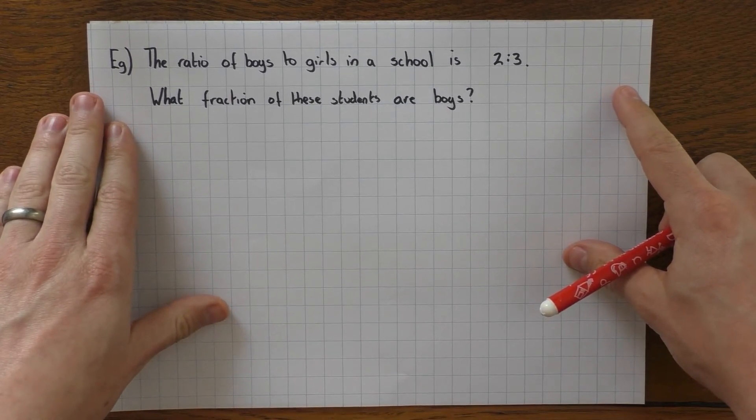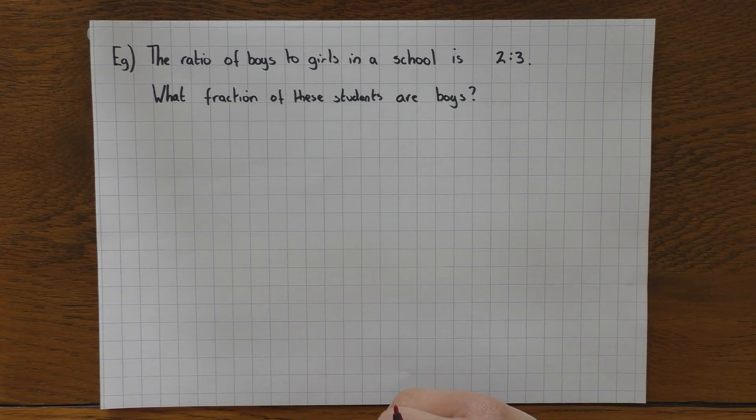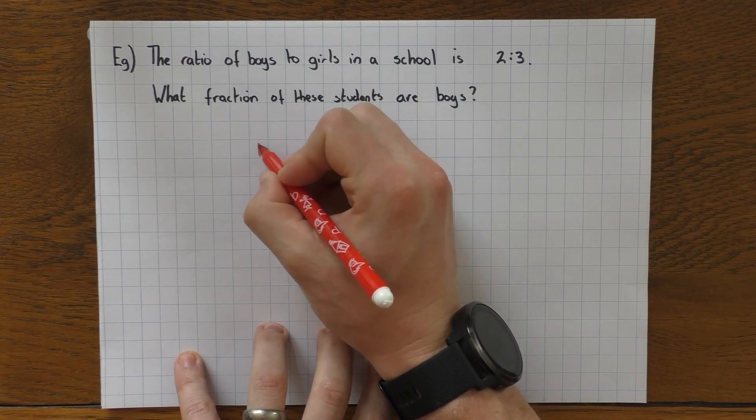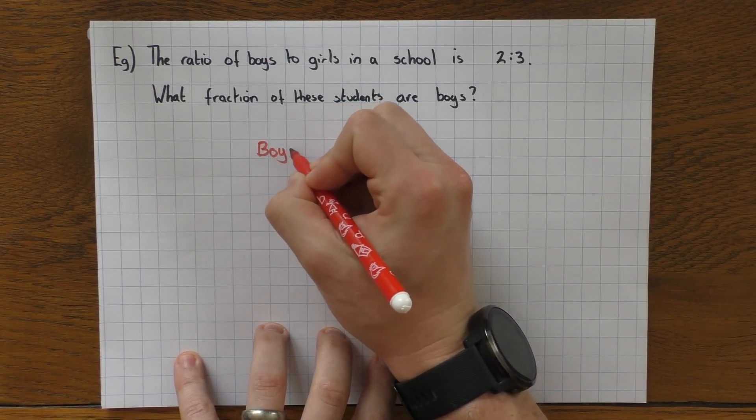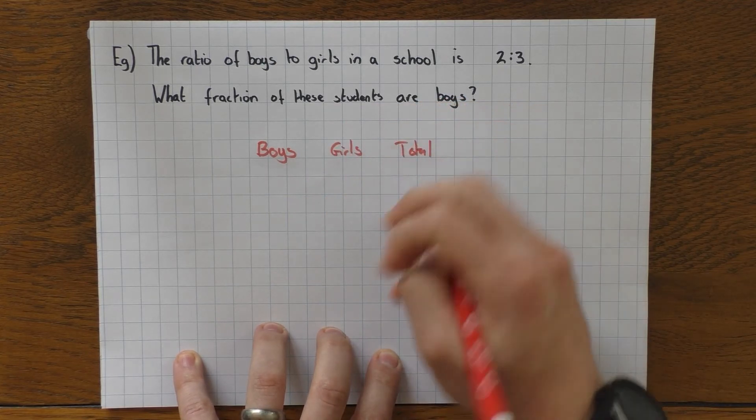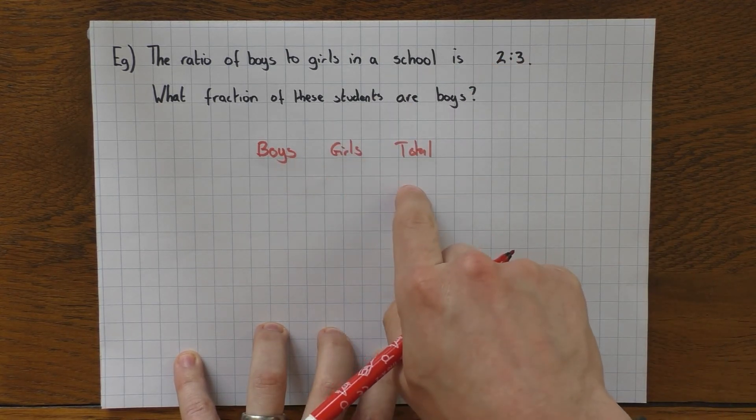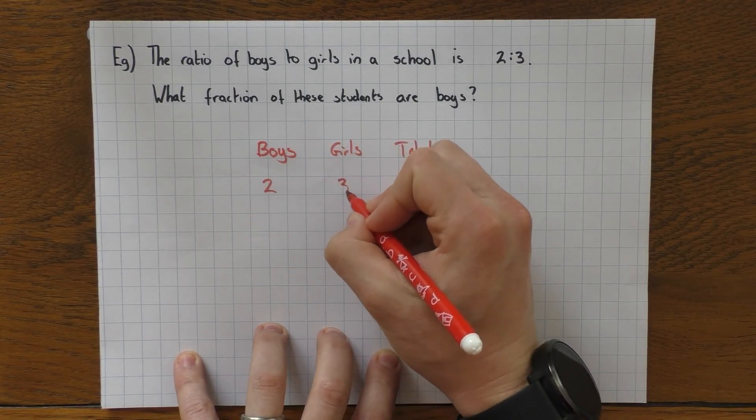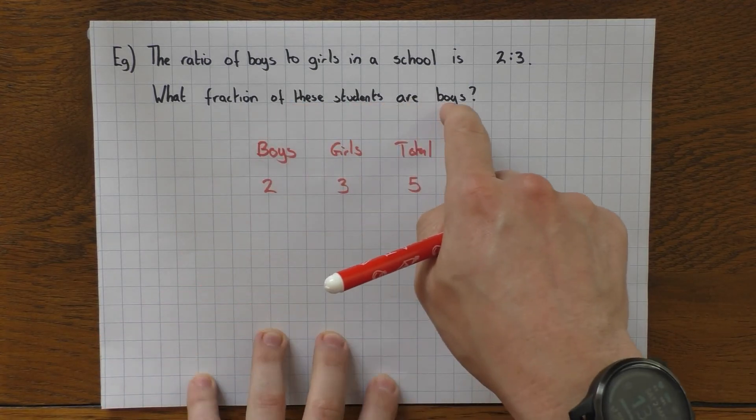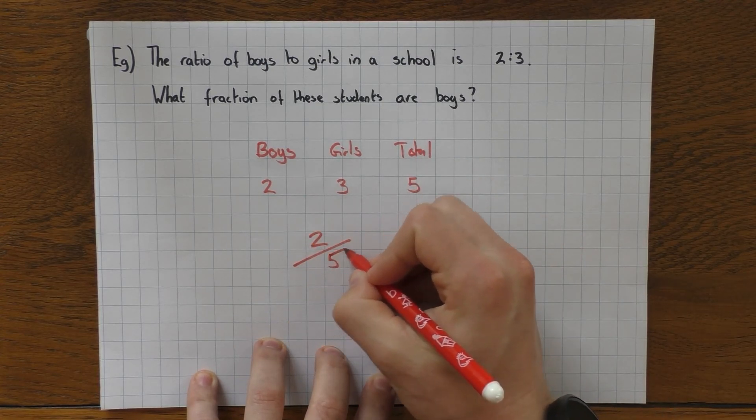And one last little thing just to tidy up the ratios: what do we do if it asks you to write it as a fraction? So here we go, here's a question here. The ratio of boys to girls in a school is 2 to 3. What fraction of these students are boys? So it's no different to the method we've done—we stick it into a table. So I have boys, girls, and I have total. Now what most people will do is go 'oh it's two-thirds, two out of three,' but if you put it into a table where we have 2 to 3 with a total of 5, hopefully you won't fall into that trap.